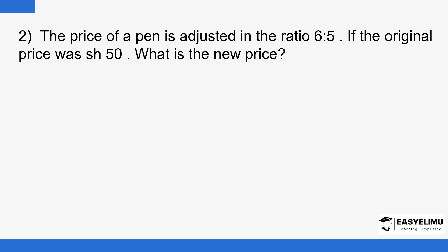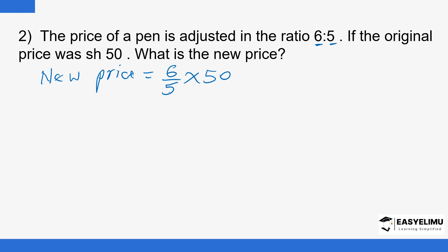The ratio here is the ratio of new to old. If the original price was 50, what is the new price? The approach is the same. The new price is going to be 6 over 5, multiplied by 50. Five goes into 5 once and into 50 ten times, so 10 times 6 is 60. The new price is 60 shillings.